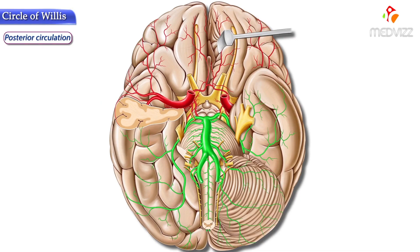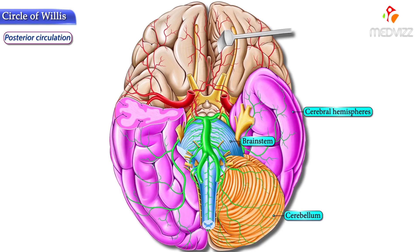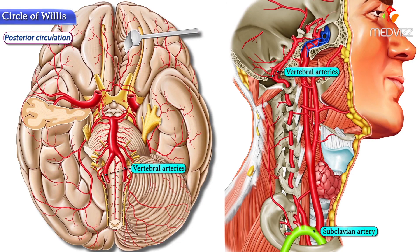Now let's take a look at the posterior circulation. This half of the circle provides the posterior circulation and mainly supplies structures like the cerebellum, brain stem, and posterior aspects of the cerebral hemispheres. The two vertebral arteries originate from the subclavian artery, course upwards through the neck, and ascend on the anterolateral aspect of the medulla to unite at the lower border of the pons.